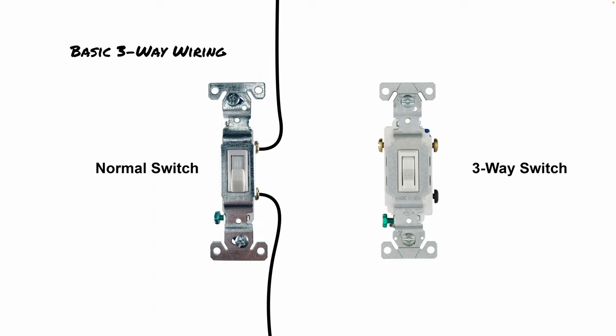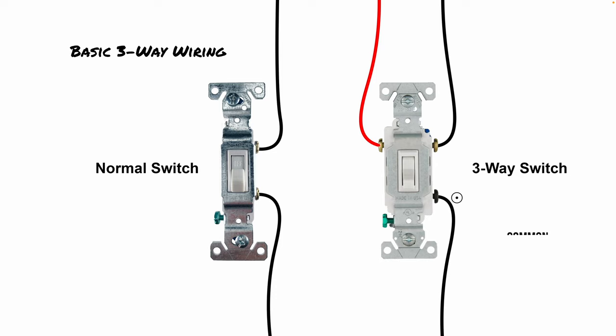On a three-way switch, you've got the hot wire coming into the black terminal typically, and then you've got two brass terminals that are used for the traveler wires. The traveler wires are what lets the three-way switches work independently to control the lights and make sure they turn on and off. We'll talk more about those in a second.